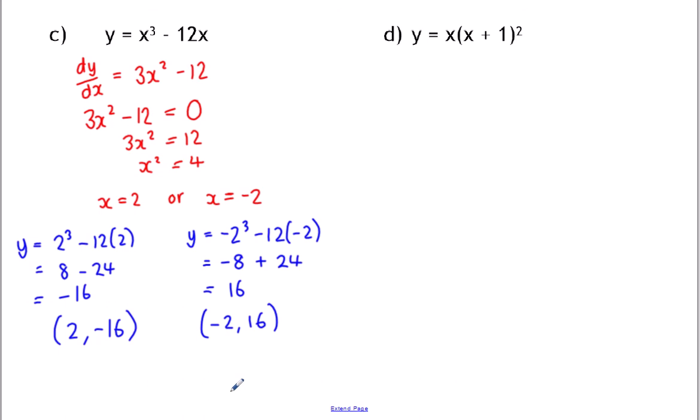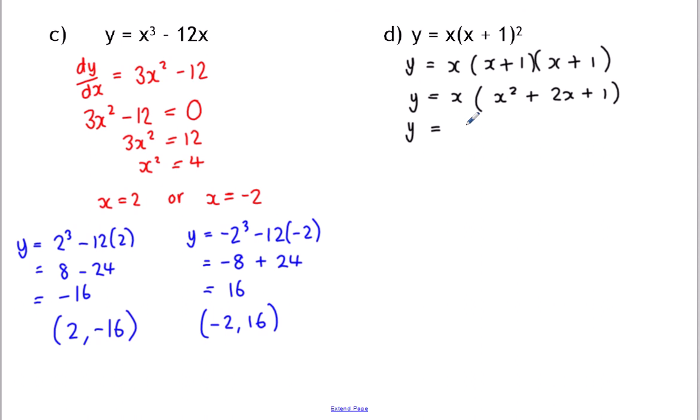D is a little bit different because it's in brackets — to differentiate it you're going to have to expand the brackets. Written in full, expanding (x+1)² gives x² + 2x + 1, and including the x from outside it becomes x³ + 2x² + x. Now we can find dy/dx and put it equal to zero. dy/dx = 3x² + 4x + 1.